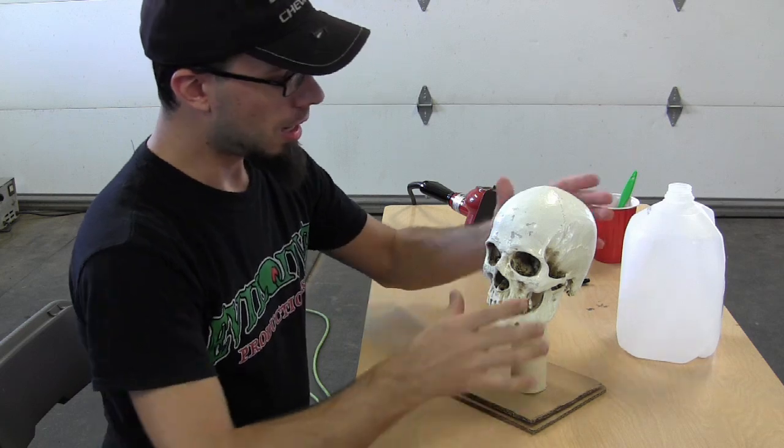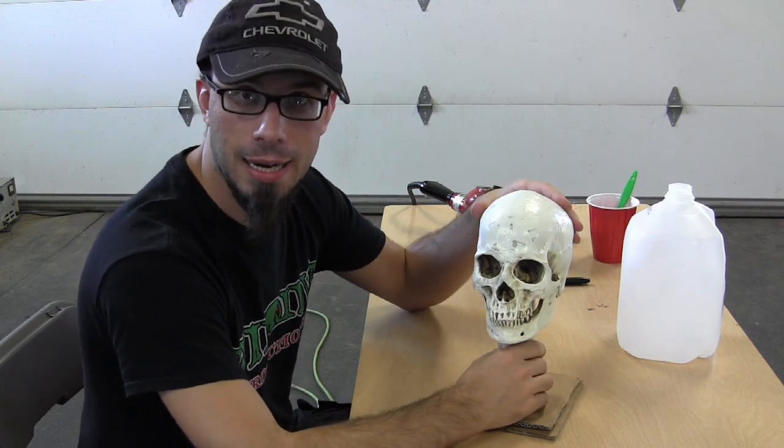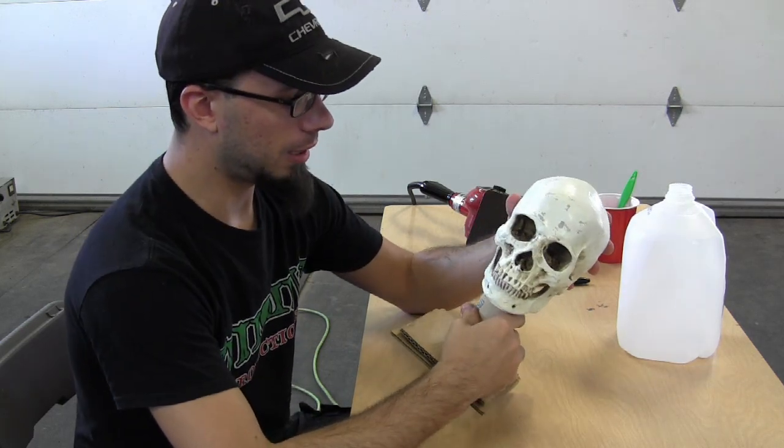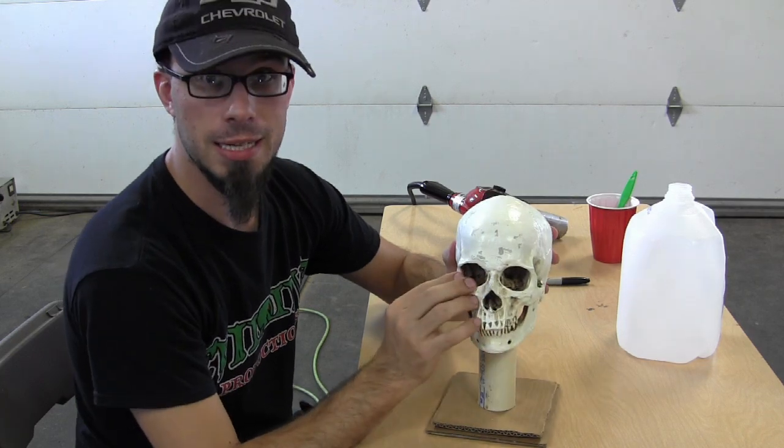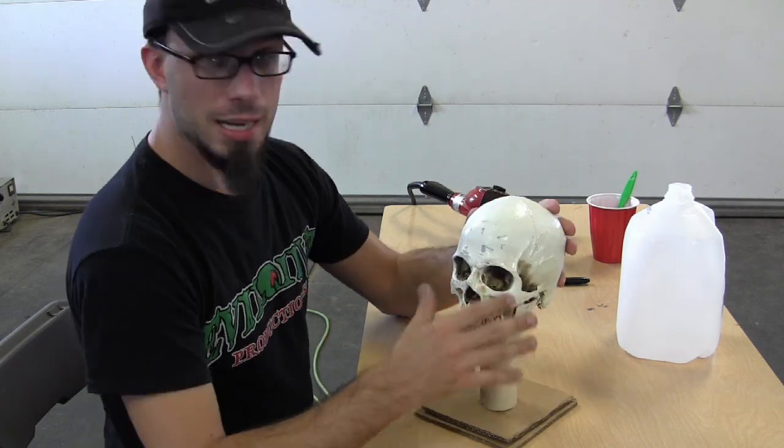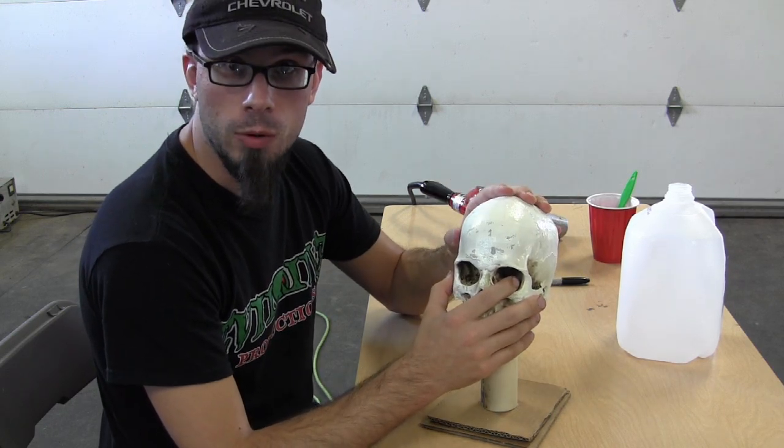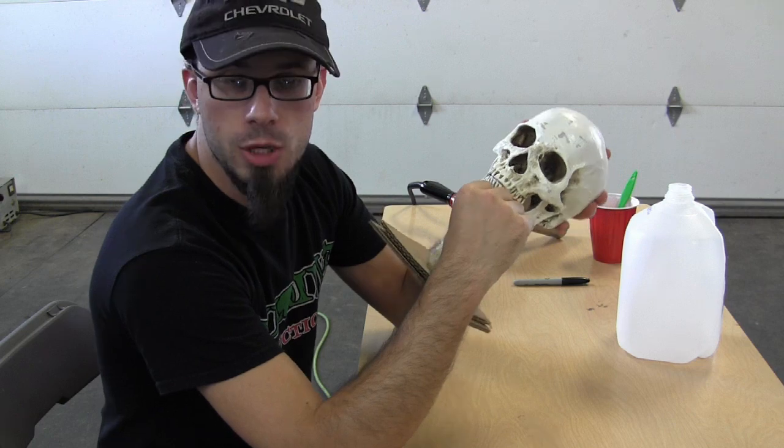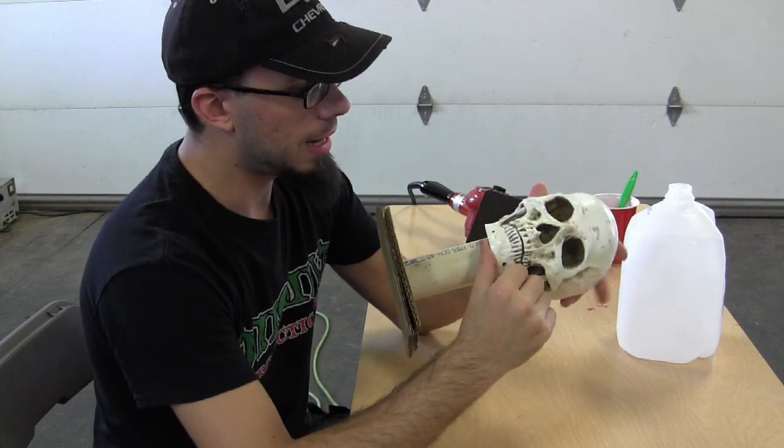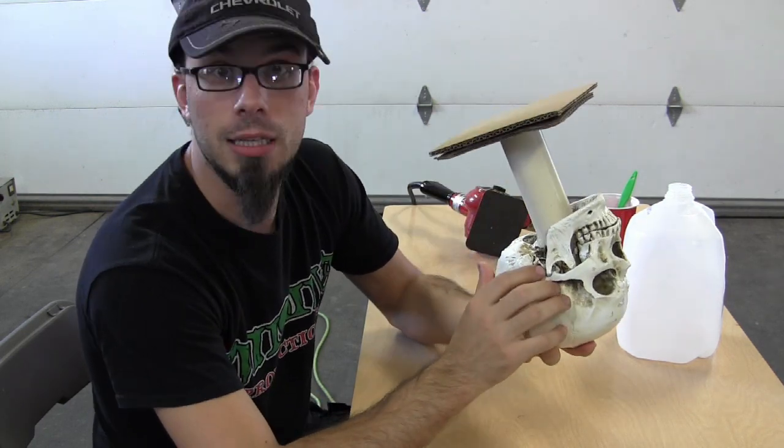Alright guys, here we go. So once again, this is a skull that we had gotten on eBay. It's got some good detail in it. It's not the super cheap ones that you'd get at pop-up Halloween stores. It's resin, so it's not going to deform when we put our heat to it. This one had a detachable jaw on it, the bottom jaw, so I went in and hot glued it in place.